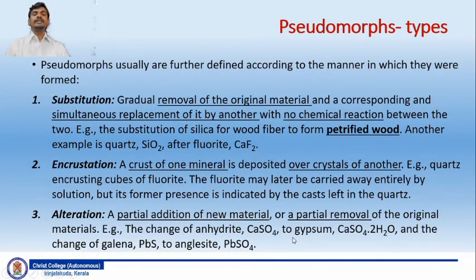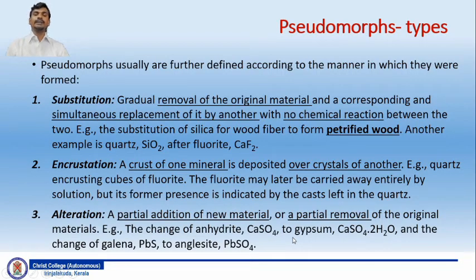There is also something called encrustation, in which a crust of one mineral is deposited over the crystals of another. For example, quartz encrusting cubes of fluorite. The fluorite may later be carried completely away by solution, but its former presence is indicated by the cast left in the quartz.